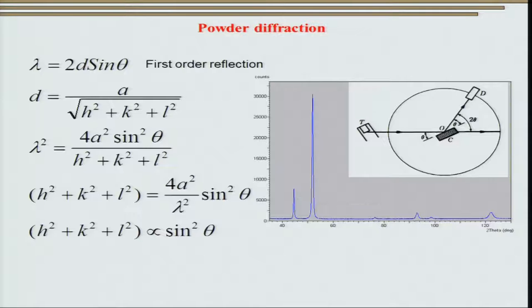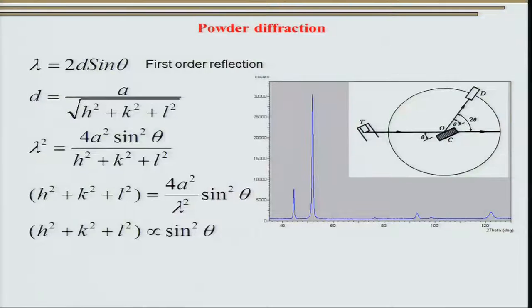A normal X-ray powder diffractometer gives us output in the form of intensity versus 2θ. Now, Bragg's law deals with nλ = 2d sinθ, so the obvious question is: where does this value of 2θ come from? Looking back at the figure from the last class, the detector makes an angle of 2θ with the incident beam. Therefore, if the sample is moving at angle θ, the detector is moving at 2θ. So whenever we do normal powder diffraction, we get an I versus 2θ plot, and from this plot we calculate θ to use in Bragg's law.